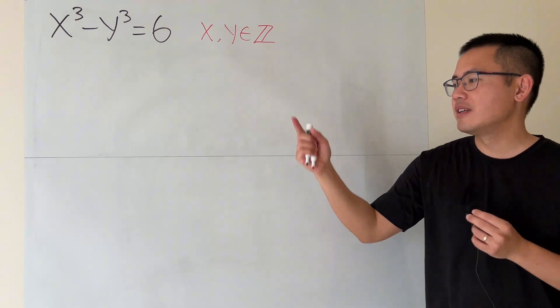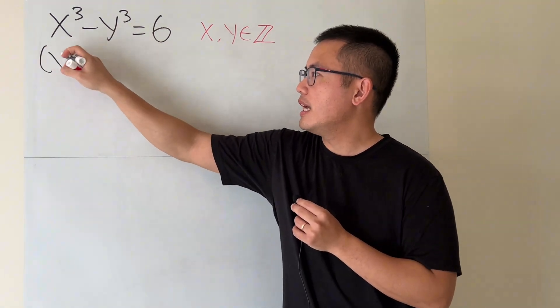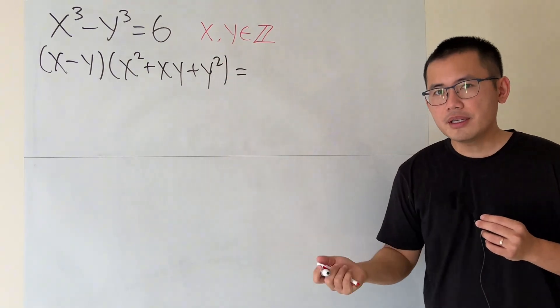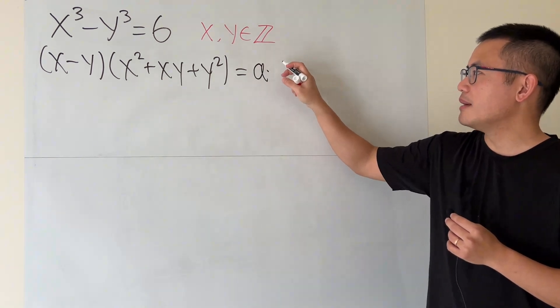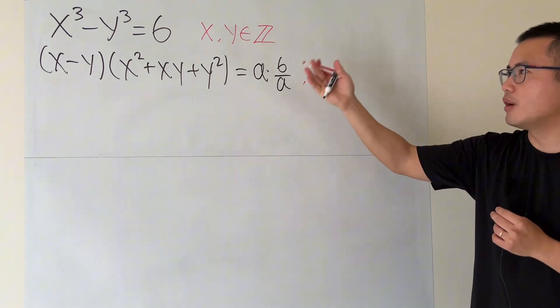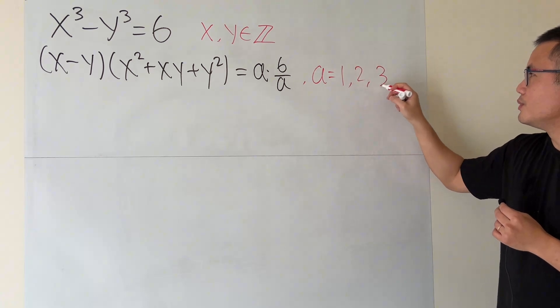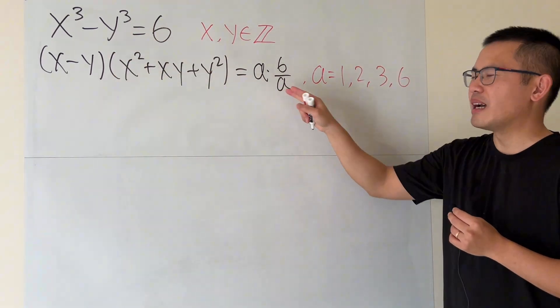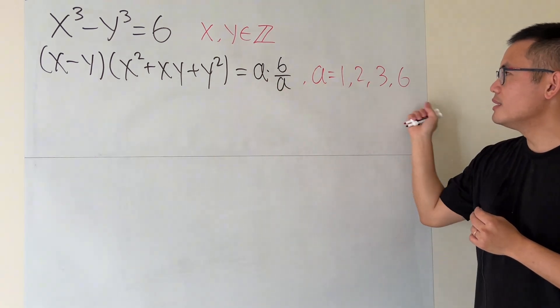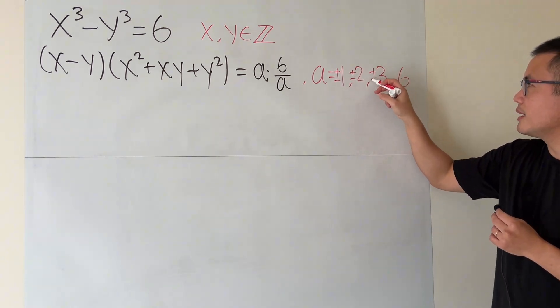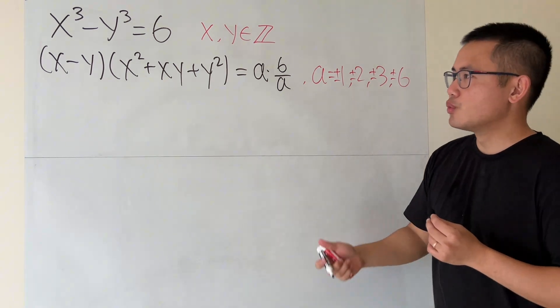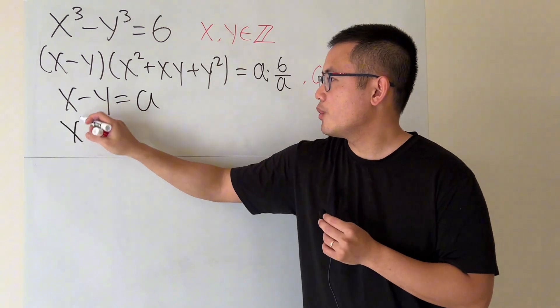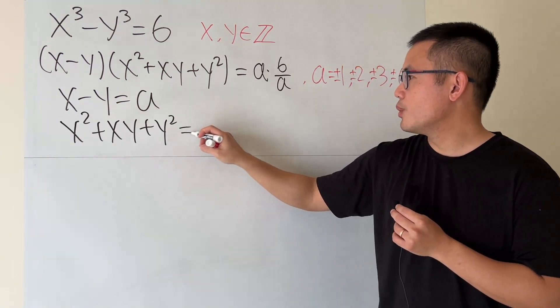So the usual business, we will factor the left-hand side. This times the difference of two cubes, so we get x minus y times x squared plus xy plus y squared. And this is equal to 6. Breakdown 6, but this time, let me write it as some number a times 6 over a. Here, a is just a factor of 6. So I'm going to say it's 1, 2, 3, 6. Now, here's the deal. In this situation, when we have the cube, we can actually have negative 1 times negative 6. For example, like negative 2 times negative 3. So in this situation, I will have plus minus 1 plus minus 2 plus minus 3 plus minus 6. Just keep that in mind.